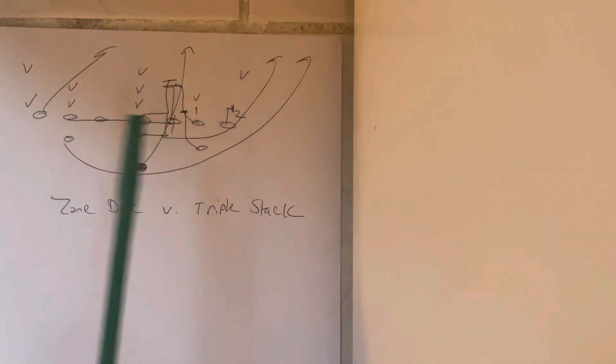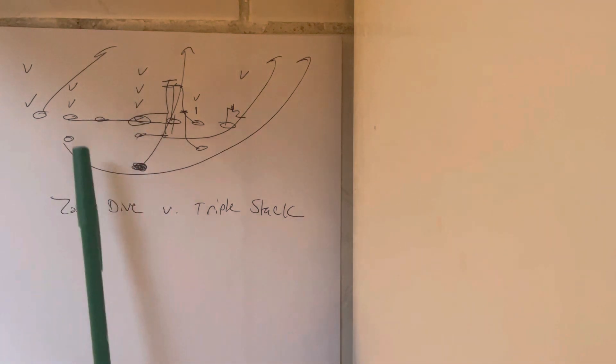The backside guard sprints through the spine of the center, which cancels the backside A gap. The backside tackle sprints through the spine of the backside guard, which cancels the backside B gap.